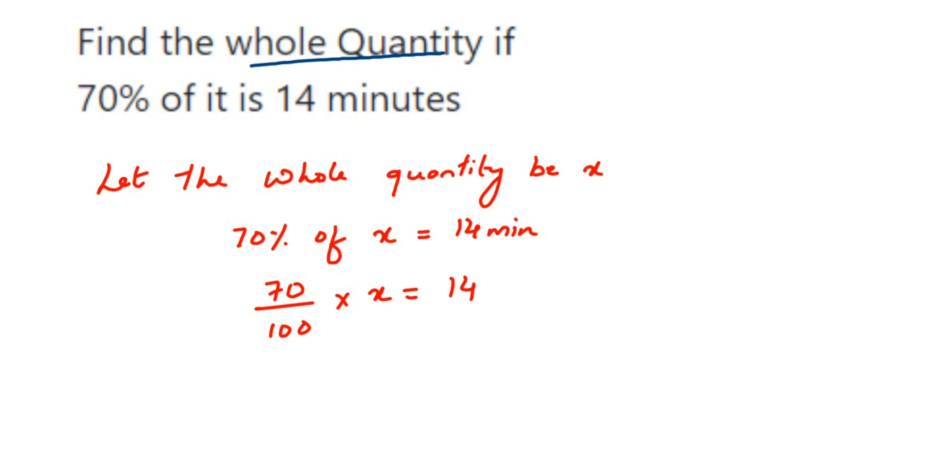Now we are going to transpose here 70 and 100 to the other side because you want only the x value. Now I will not do this in one single step. I will transpose 100 here. So 100 is in division. When you take this to the other side, it gets multiplied with 14.